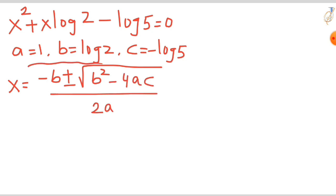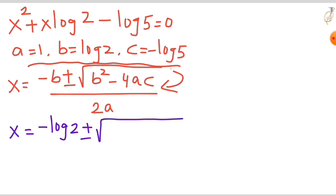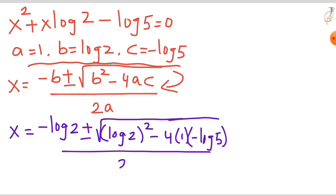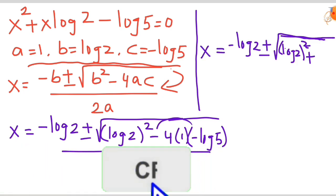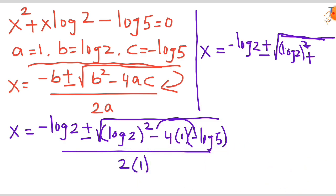Substituting these values into the formula: minus b gives minus log 2, plus or minus the square root of the discriminant, which is log 2 whole squared minus 4 times 1 times (minus log 5), all divided by 2 times 1. So x = (−log 2 ± √(log²2 + 4·log 5)) / 2.